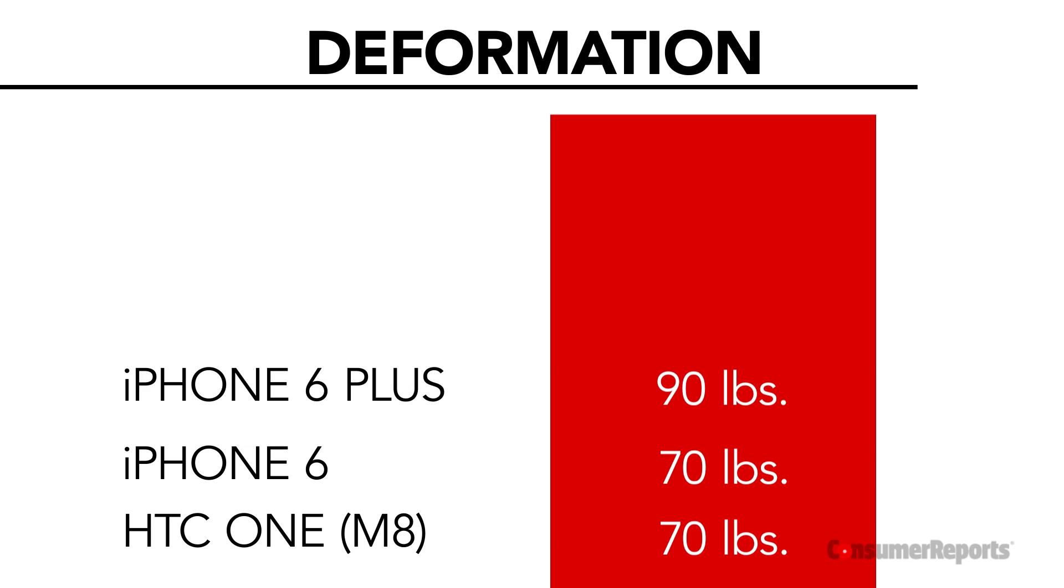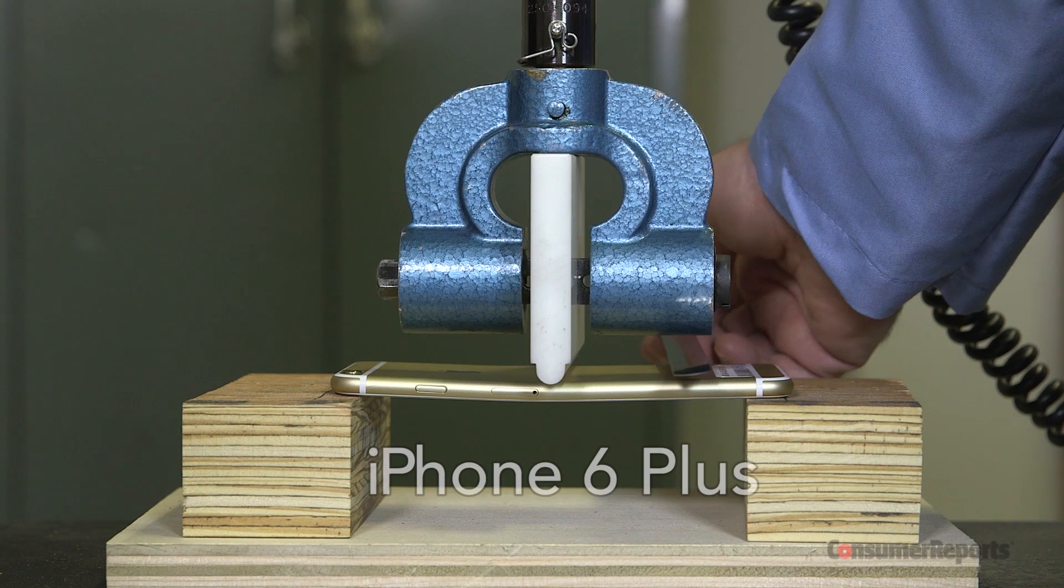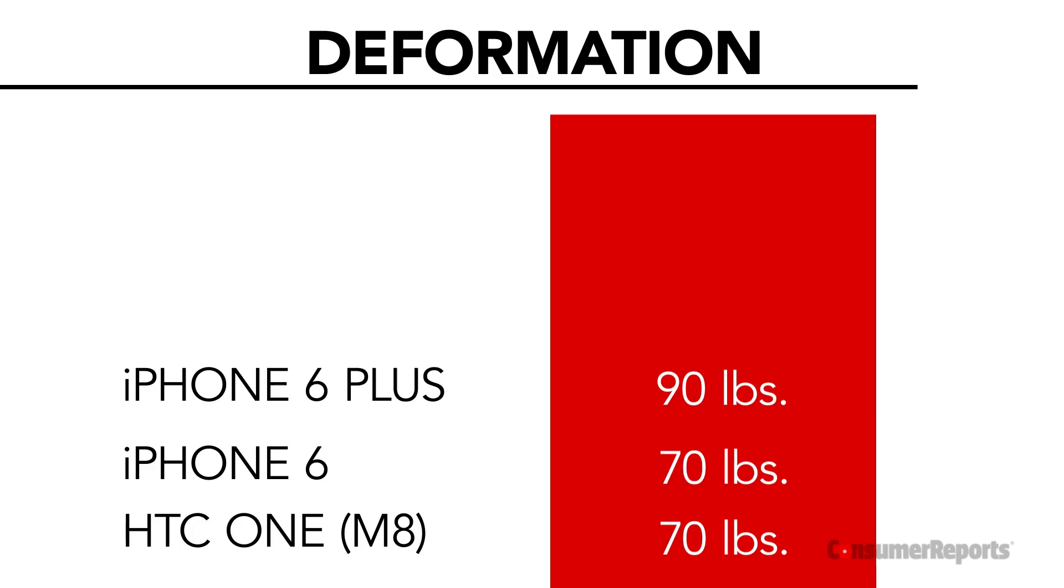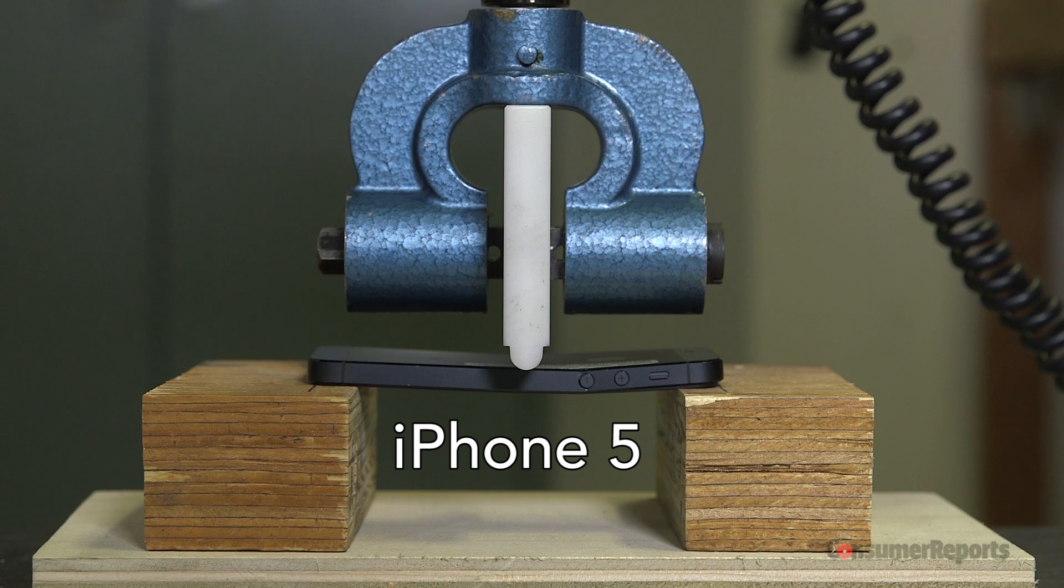The iPhone 6 Plus took more punishment at 90 pounds. But its smaller, thicker precursor, the iPhone 5, outperformed both its siblings in our test, with no noticeable deformation until 130 pounds of force.